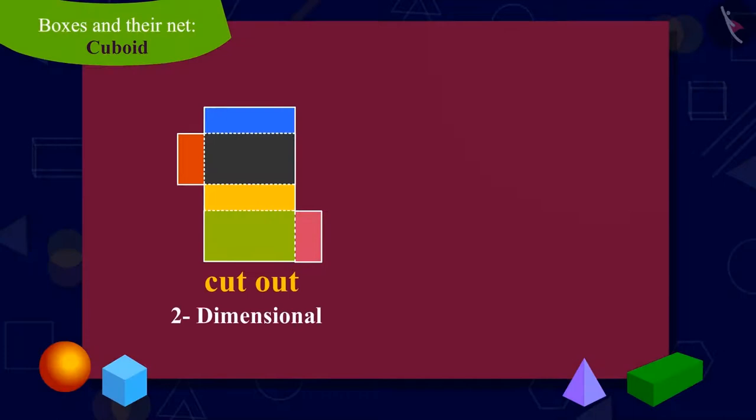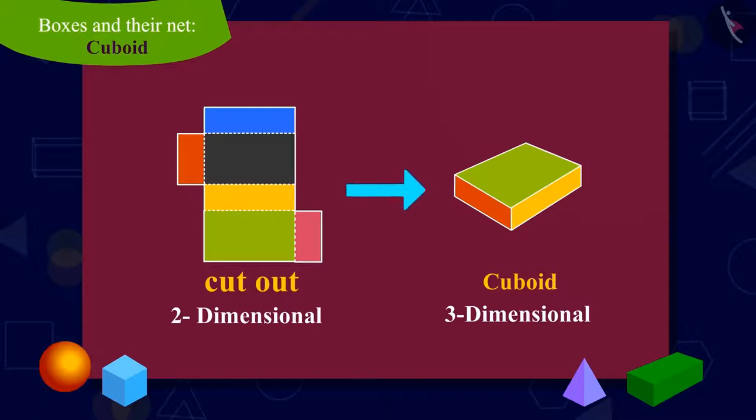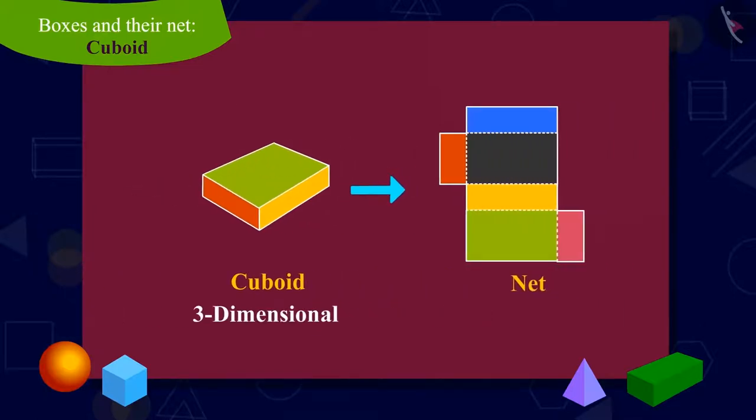Do you know that two-dimensional shapes like the cutouts of this cardboard, which when folded, we make three-dimensional shapes like the cuboid? This is called the net of the shape.